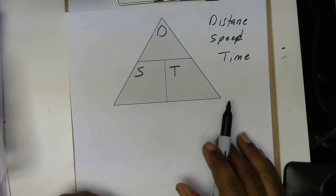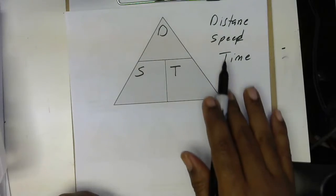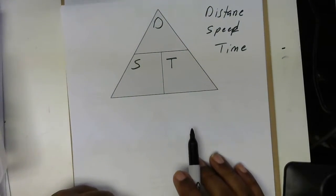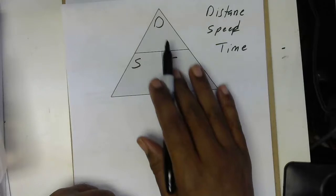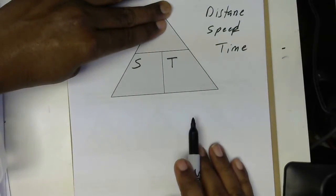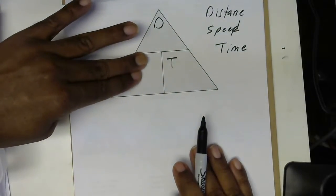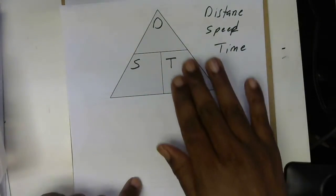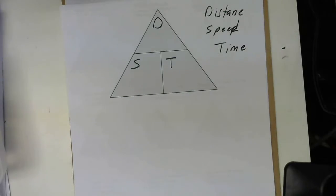We're going to use this triangle to be able to find any one of these. The one that we want to find is the one that we're going to cover up. So if we're trying to find distance, we'll cover up D. If we're trying to find speed, we'll cover up S. And if we're trying to find time, we'll cover up T.